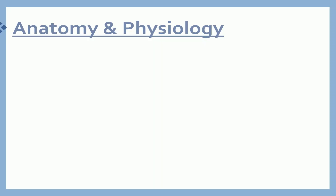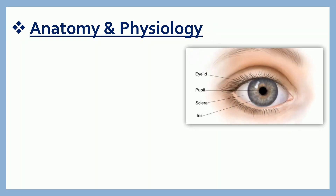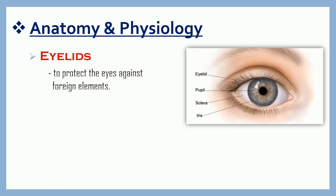Let's discuss briefly the anatomy and physiology of our eyes. First are the eyelids. One of the main functions of the eyelid is to protect the eye against foreign elements. In the human eyelids, there is a row of eyelashes that also protect the eyes. Another important function of an eyelid is to moisten the eyes by blinking.